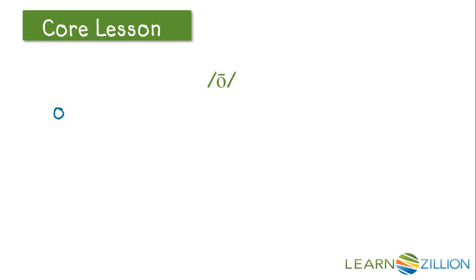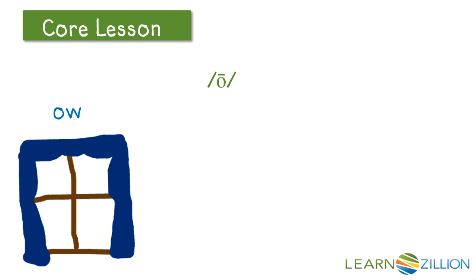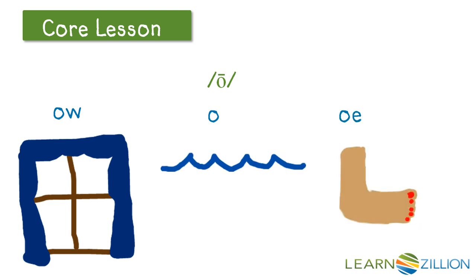Let's look at the sound O and figure out which letters can make it. OW as in window, O as in ocean, and OE as in tow.